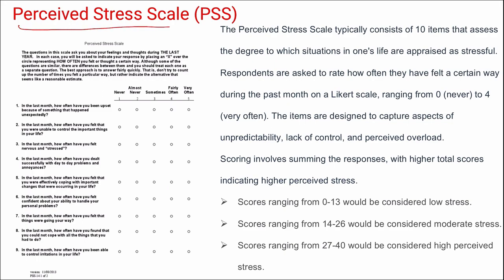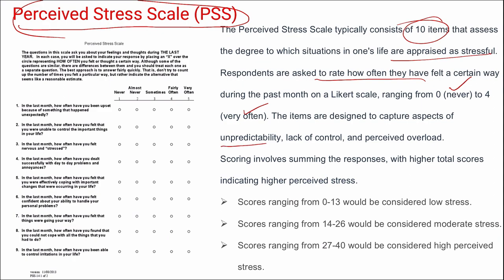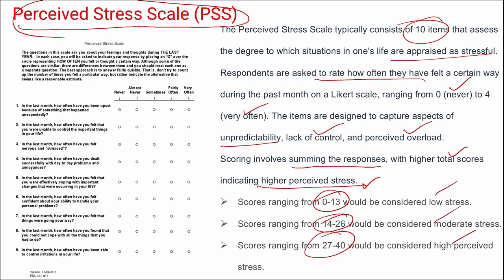Next is the Perceived Stress Scale (PSS), typically consisting of 10 items that assess the degree to which situations in one's life are appraised as stressful. Respondents rate how often they felt a certain way during the past month on a Likert scale of 0 to 4 (never to very often), capturing aspects of unpredictability, lack of control, and perceived overload. Scores of 0–13 indicate low stress, 14–26 moderate stress, and 27–40 high perceived stress.